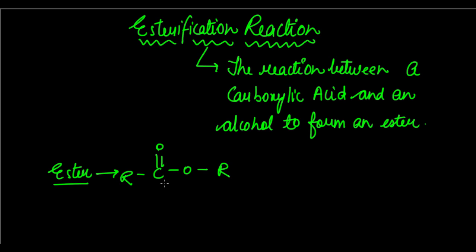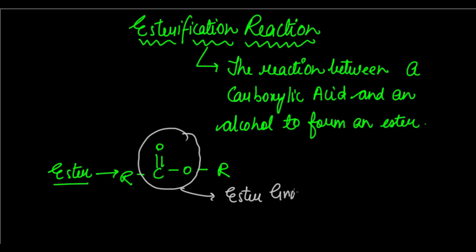R usually denotes alkyl group. So when an alkyl group is bonded to a carbon, double bonded to an oxygen, then bonded to an oxygen, then bonded to another alkyl group — this functional group is what we call an ester group. Whenever we have this ester group, we say that compound is an ester. The formation of this ester when a carboxylic acid reacts with an alcohol in the presence of an acidic medium is what we call an esterification reaction.